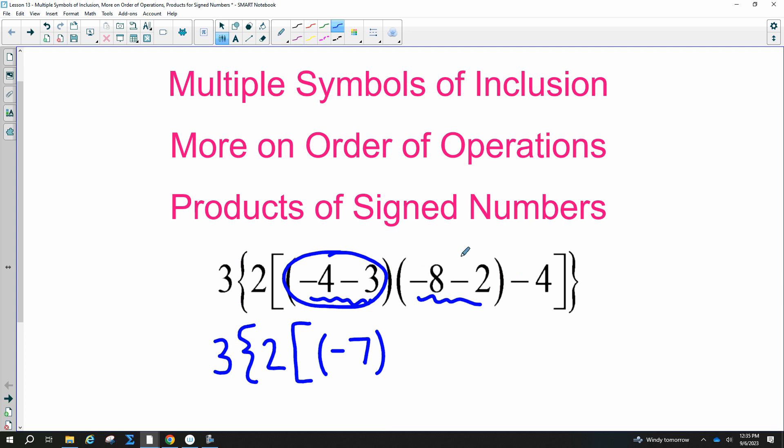Keep the parentheses there. Now we have another one, negative 8 minus 2. Everyone, what is that? Good, it makes a bigger negative, negative 10. And then I have the minus 4 with the bracket and the weird bracket.